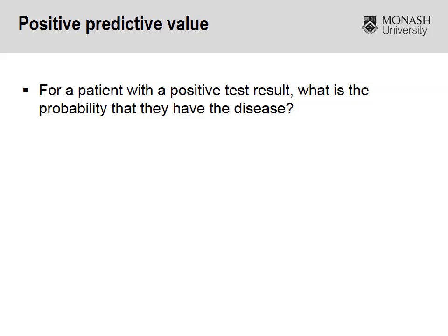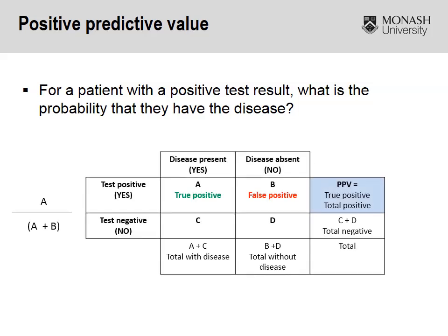We have both positive and negative predictive values. A positive predictive value is basically saying: for a patient who has a positive test, what is the probability that they do have the disease? If we go through our 2x2 table again, we flip it in the sense of how we calculate sensitivity and specificity. Rather than going vertically, with predictive values we're looking at things horizontally. The formula is A divided by A plus B.